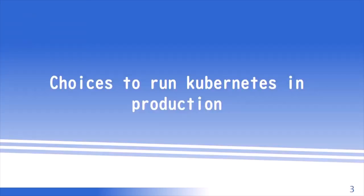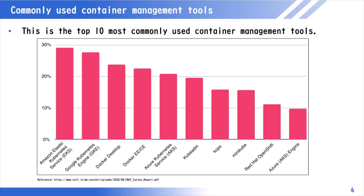Let's talk about the options for running typical Kubernetes container management tools in a production environment. This is taken from the Cloud Native Computing Foundation Survey Report published this year. Looking at this report, we can see that many companies use public cloud managed services such as AWS EKS, GCP GKE, Azure AKS, and so on. Many companies use the container management services provided by each public cloud vendor instead of building and operating a container management platform from scratch themselves.